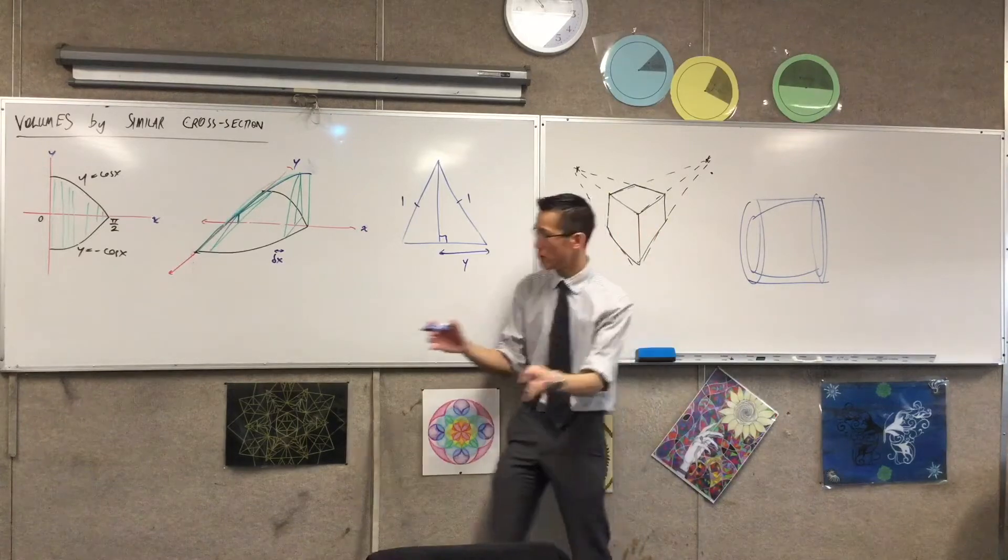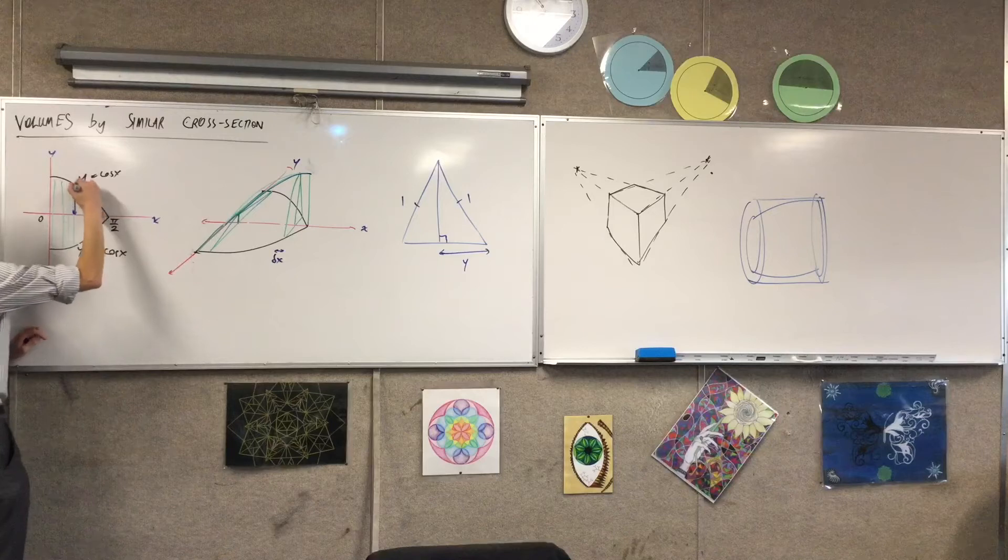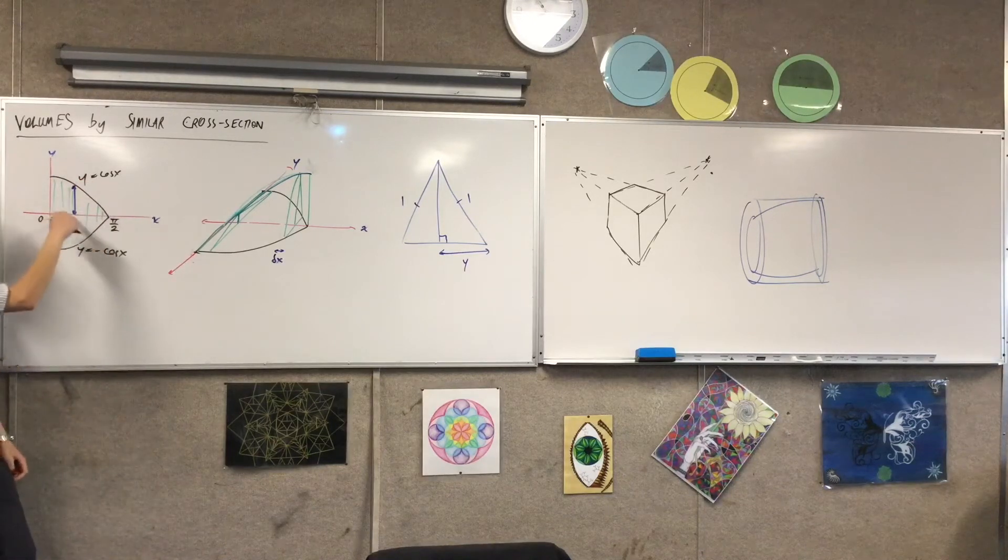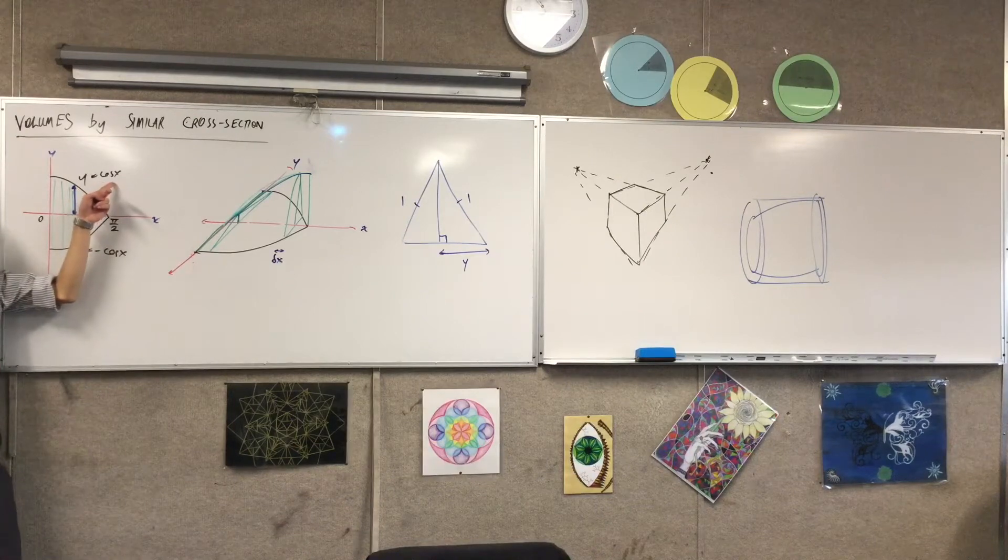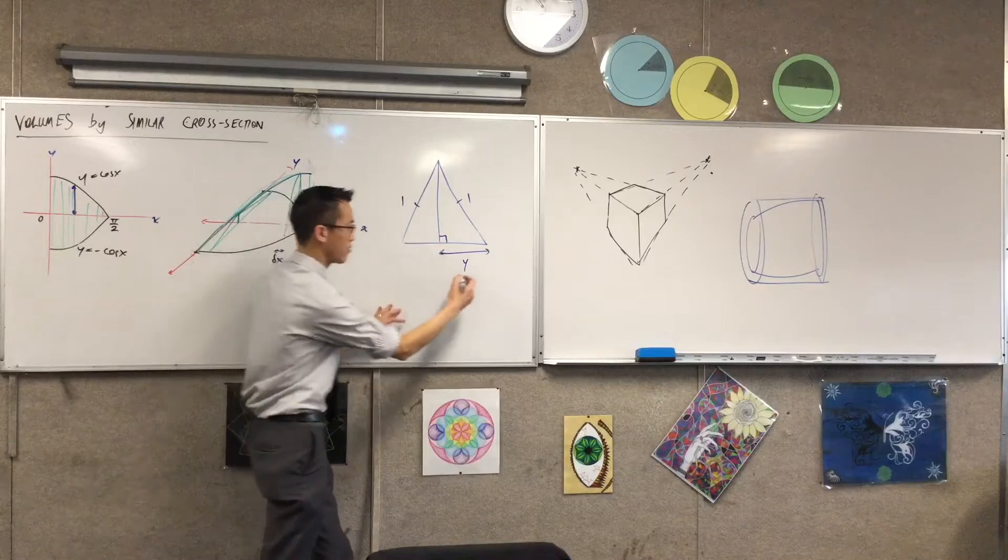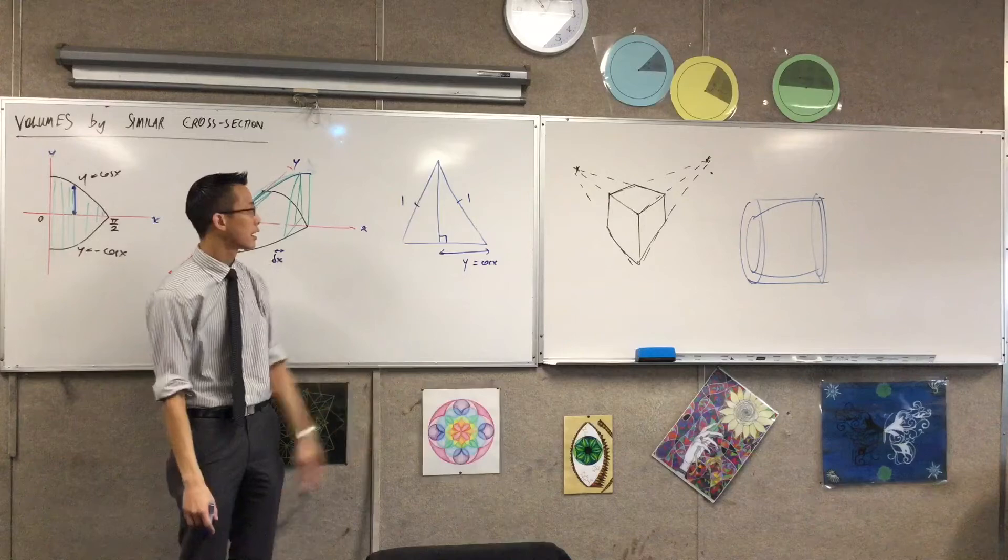So you can see, just in case you're not catching that, that distance that I put there is a distance like this. That's that distance. It's half of the base. And clearly, that's the y-coordinate, which is just defined as cos x. So therefore, I've got this part is y, which is cos x. So the base is just double that.